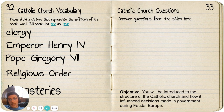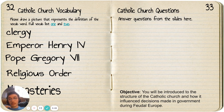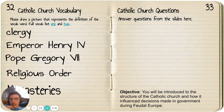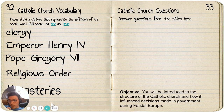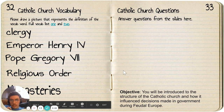So you're going to write 'Catholic Church Vocabulary,' and what we want you to do for this assignment is to please draw a picture that represents the definition of the vocab word. Your vocab words for this lesson are going to be: Clergy, Emperor Henry IV, Pope Gregory VII, Religious Order, and Monasteries.